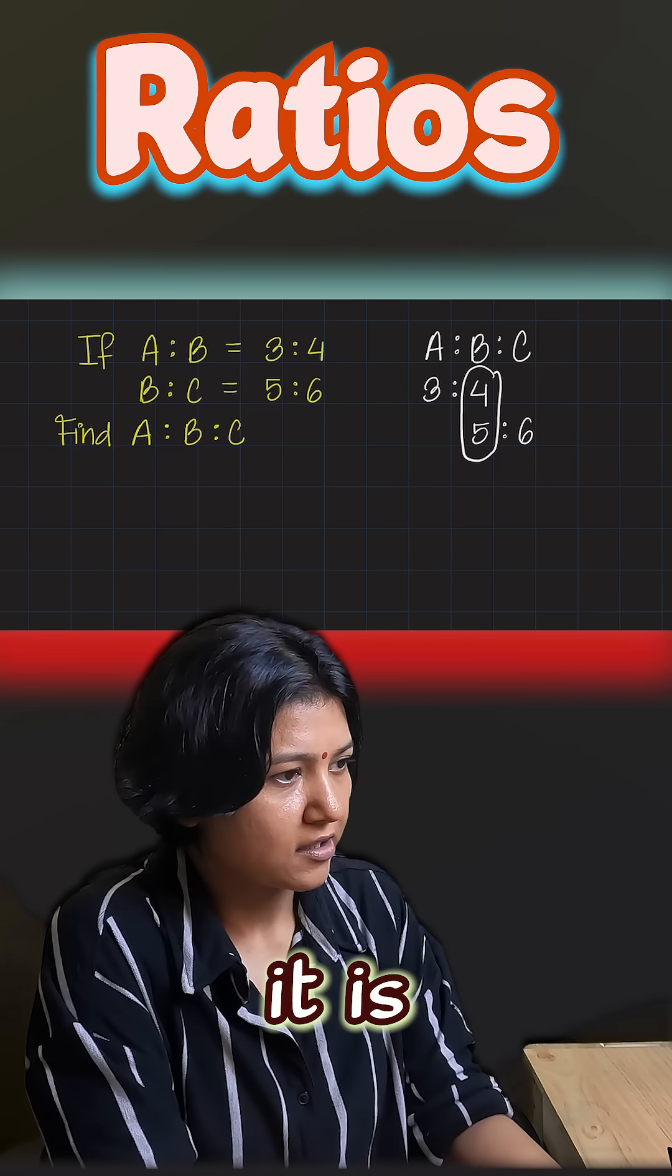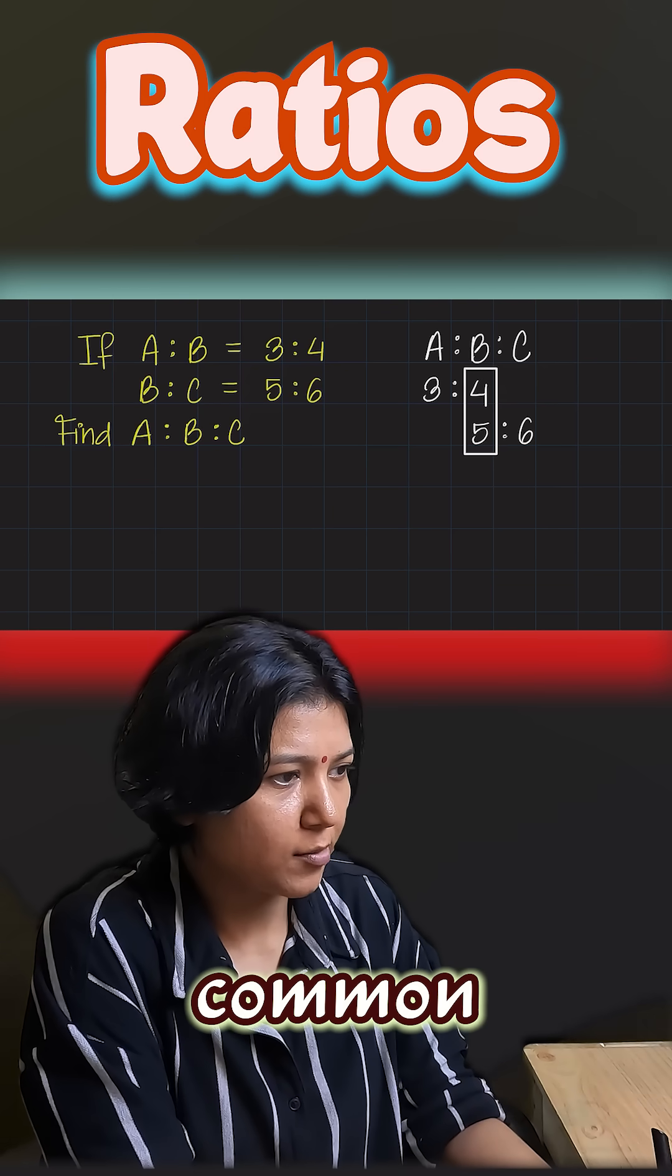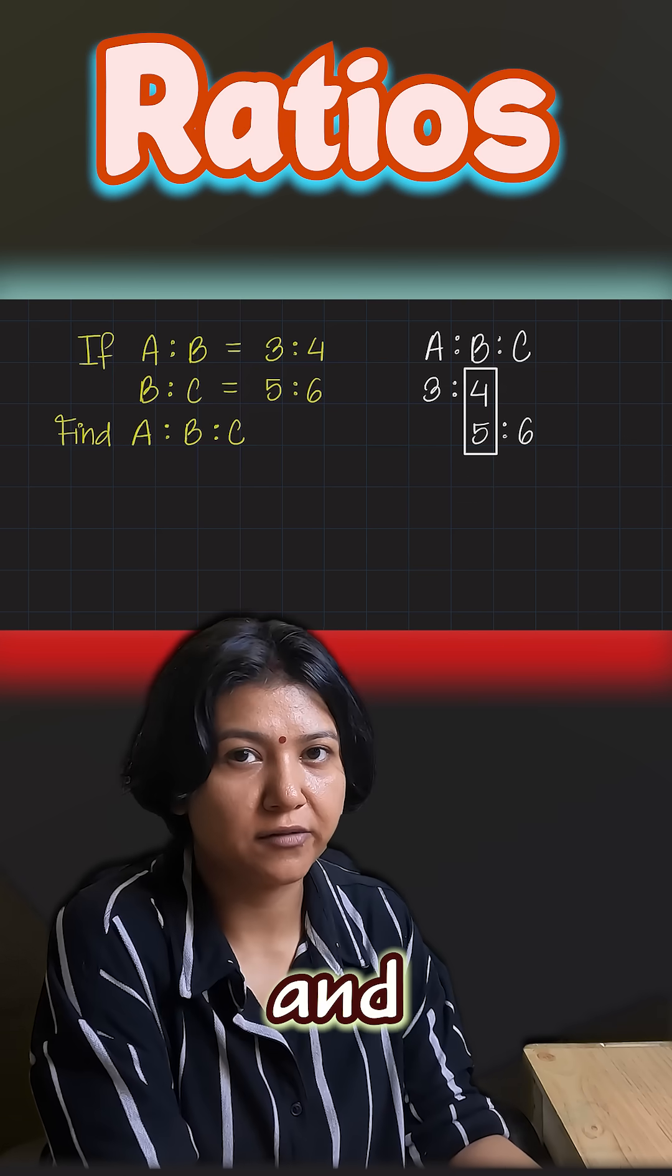What is the quickest way to solve it? You'll multiply the values with each other, meaning you want to make the value of b common in both scenarios. So four and five, what's the common value for four and five? Their first multiple.